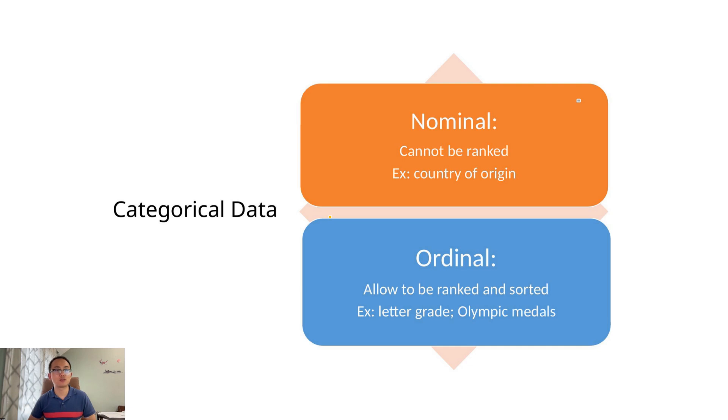Now let's switch over to categorical data, which can be either nominal or ordinal. Nominal data is the simplest type. We can group items, but we can't rank them. Examples include country of origin or transaction type. There's no order, just categories. Ordinal data, on the other hand, does have a sense of order or ranking. A great example is letter grades. A is better than B, and B is better than C, but we don't know how much better, just that there's a rank. Quick tip: if categories can be ranked, it's ordinal. If not, it's nominal.